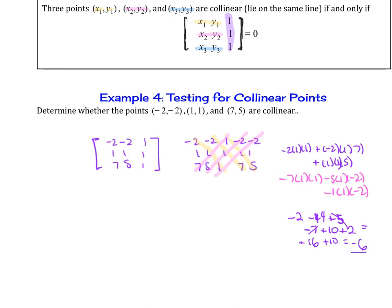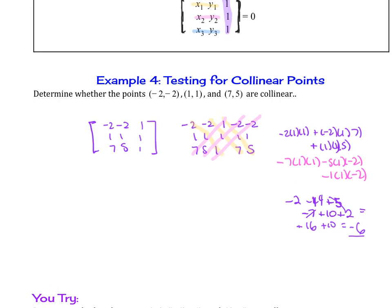And then we know, therefore, that it's not collinear. And actually, if we were to figure out the area of the triangle, because we could, we do negative 1 half times negative 6, we would find that the triangle is 3 square units.